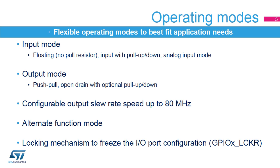For each I/O pin, the slew rate speed can be selected from four ranges to compromise between maximum speed and emissions from the I/O switching, and to adjust the application's EMI performance. I/O pins are also used by other integrated peripherals to interface with the external environment. Alternate function registers are used to select the configuration for the peripherals in this case. Configuration of the I/O ports can be locked to increase robustness of the application. Once the configuration is locked, by applying the correct write sequence to the lock register, the I/O pin's configuration cannot be modified until the next reset.